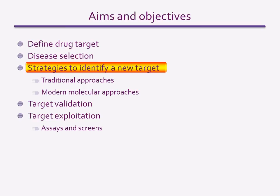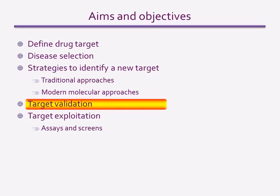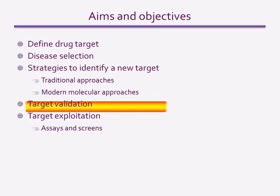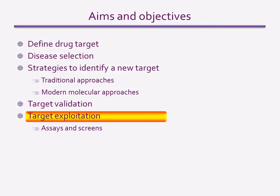Historically, there are many examples of drugs being discovered before their targets were known, and targets continue to be identified this way. But today, the main strategy is to research the disease in order to identify particular molecules that might make suitable drug targets. You should also be able to explain how a new drug target is validated and then exploited for drug discovery. At the end of the lecture, I will briefly explain how assays and screens are used to exploit targets, which will be followed up in detail in later lectures.